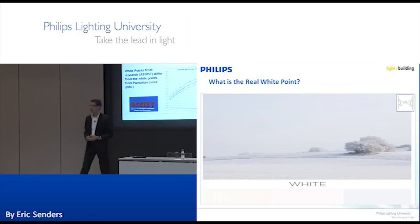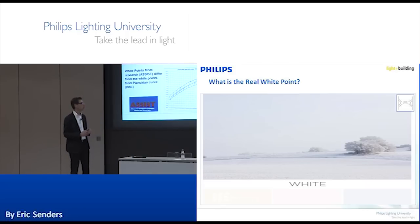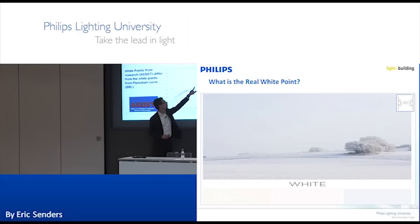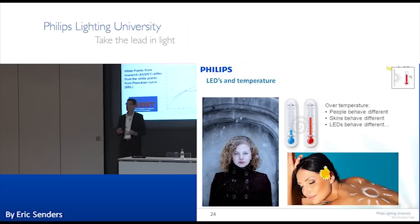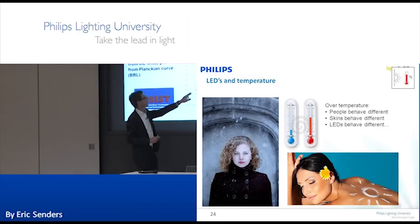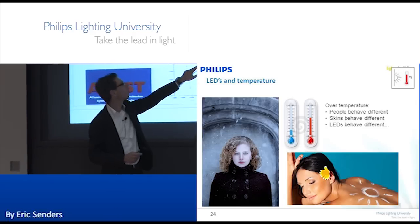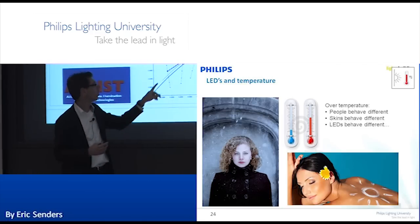ASSIST, in combination with Rensselaer — a research institute working globally — has done research on where the real perceived white point is. They asked consumers, without telling them about the Planckian black body curve, 'do you believe this is white?' It seems that at 4000 Kelvin and above, the real perceived white point for people is above the black body line.